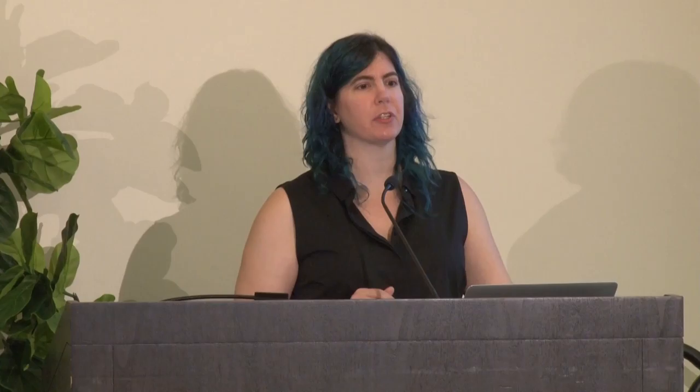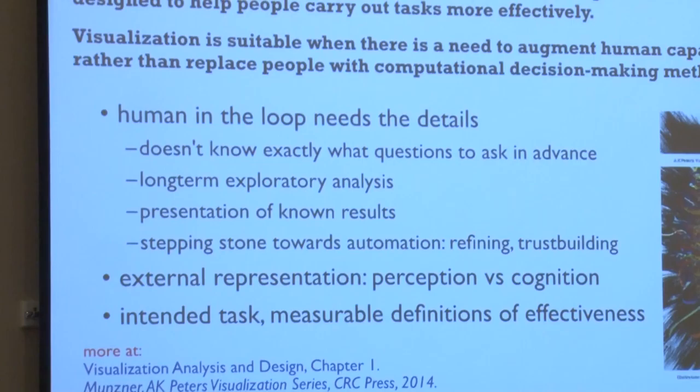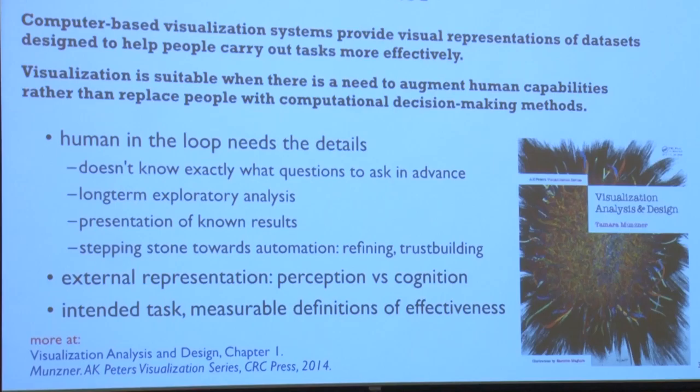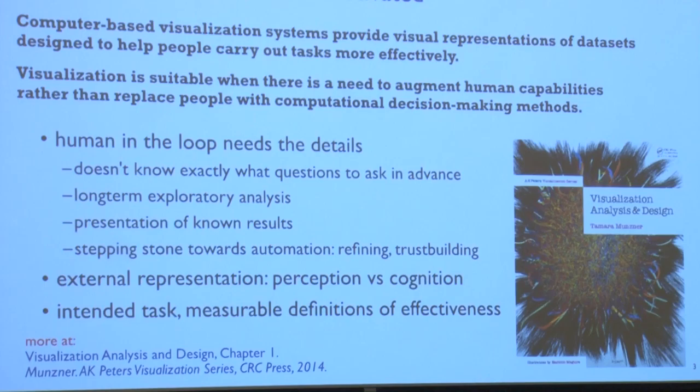I'll start with my own definition for visualization and some of the motivations for when we would use it. The definition in my book is computer-based visualization systems — I'll say VIS for short to save many syllables over the next hour. VIS systems provide visual representations of datasets designed to help people carry out tasks more effectively. It's suitable when there's a need to augment human capabilities rather than replace them with a completely computational method.